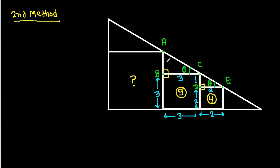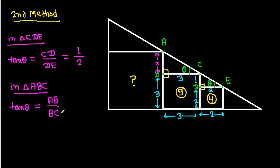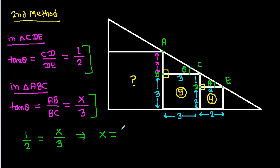Suppose AB is X. In triangle CDE, tan theta equals CD over DE, that is 1 over 2. In triangle ABC, tan theta equals AB over BC, that is X over 3. From these two equations, 1 over 2 equals X over 3, so X equals 3 over 2.